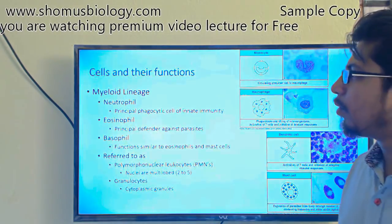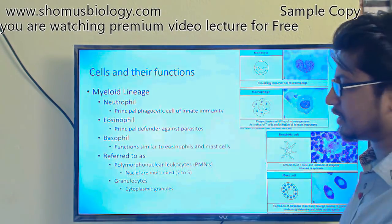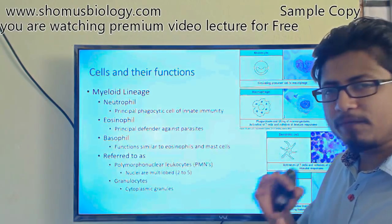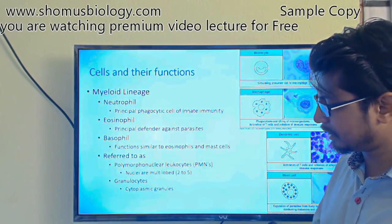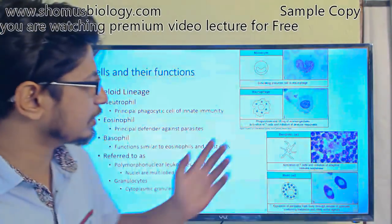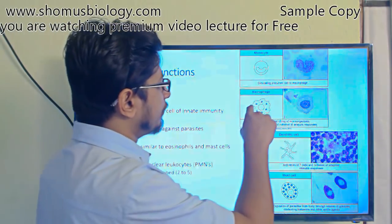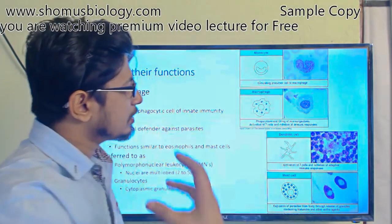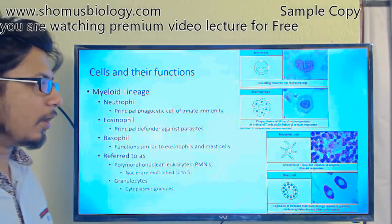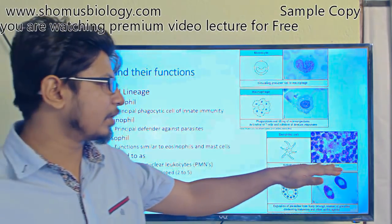Neutrophils, eosinophils, and basophils are collectively referred to as polymorphonuclear leukocytes, or PMN, because their nucleus is fragmented and connected in a corridor-like system with two to five lobes. You can see in the picture this multi-lobed nucleus — these polymorphonuclear cells clearly show two separate lobes. Dendritic cells are activators of T-cells and also initiate the adaptive immune response.